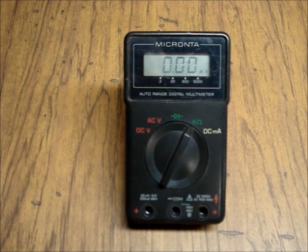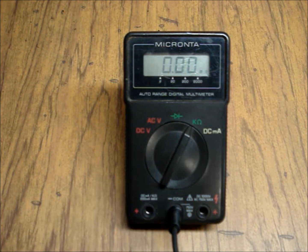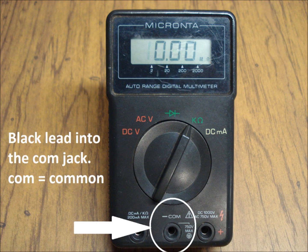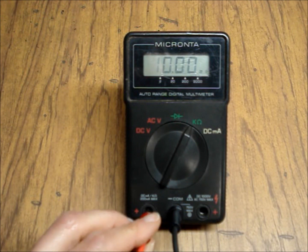Plug the black lead into the jack labeled COM, that stands for common, and you'll always put the black lead into the common jack. Find the jack that has the omega or the ohm symbol and insert the red lead into that jack.